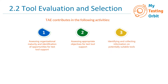Number three is identifying and collecting information on potentially suitable tools. Whenever you are looking for a potential automation tool, it will not be the case that you just see one tool working for some other company and assume it will work the same for you. Always make sure you are evaluating at least a few tools and then identify which will be most suitable for your company and the project you will be using it for.